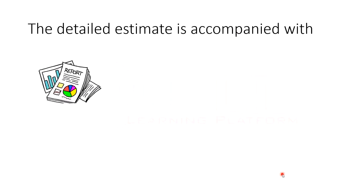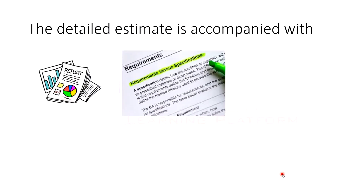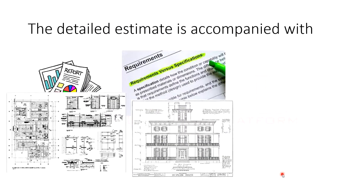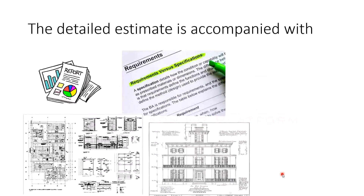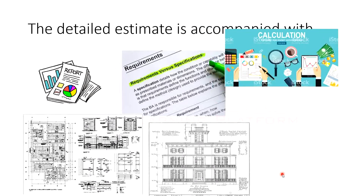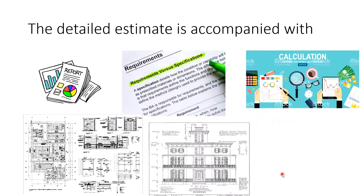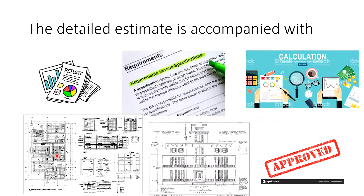The detail estimate is combined with a report, specifications, and detail drawings showing plans, different sections, key or index plans, design data, and calculations. Submitting all these documents enables approval from the relevant agencies to carry out the contractor work.